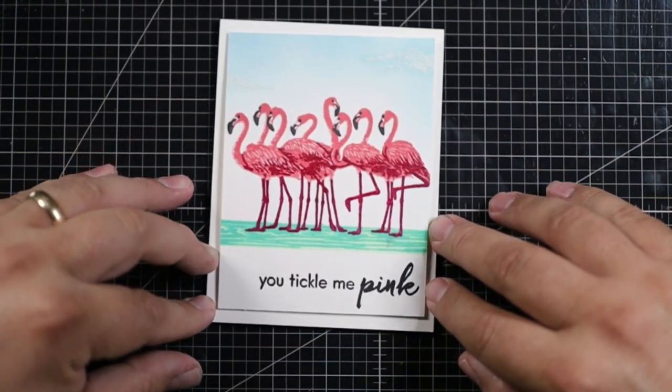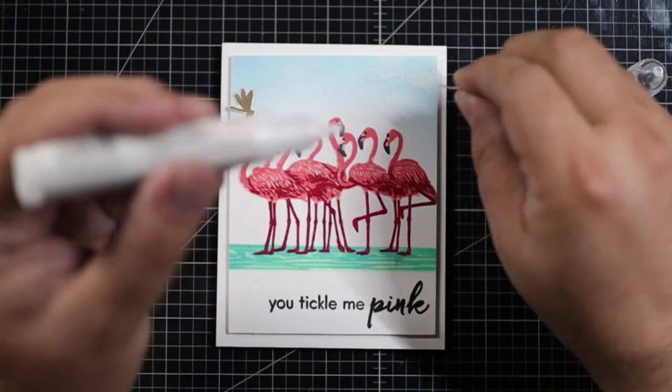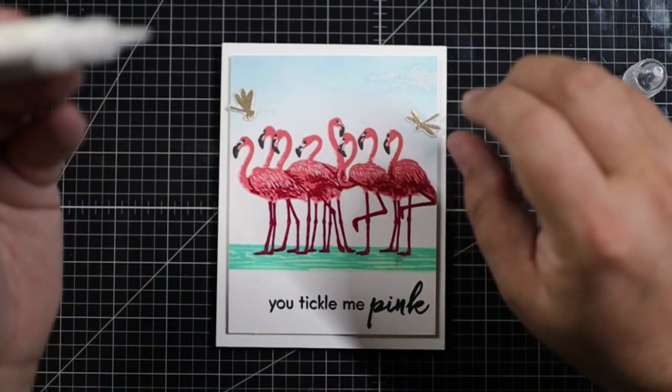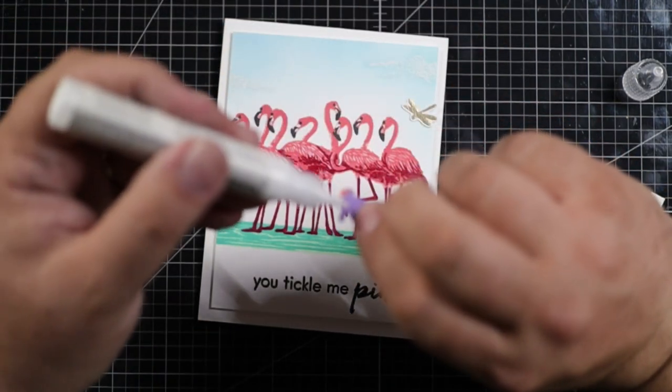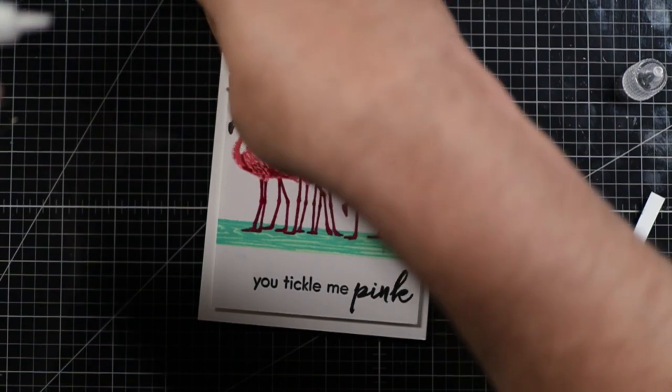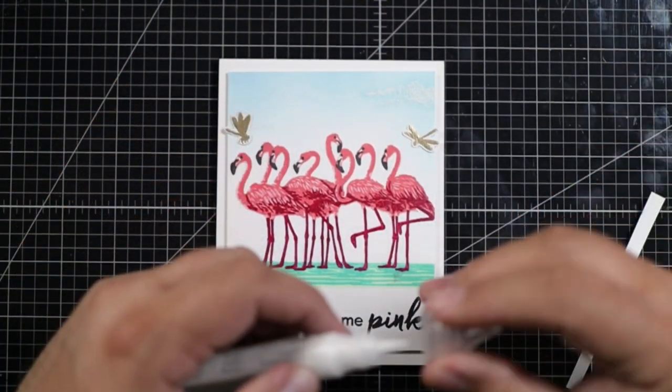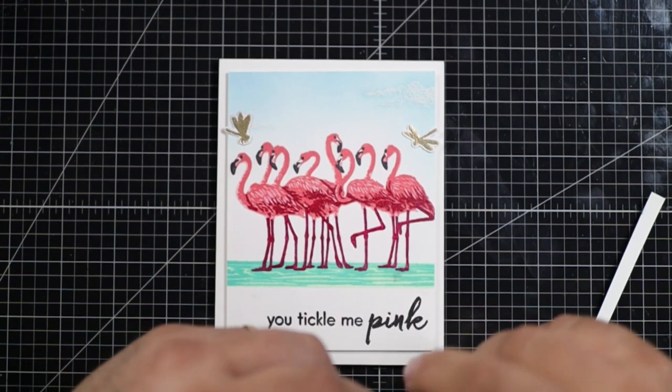And I had some leftover gold glitter embossed dragonflies from another project. I thought they'd be fun just to glue here on the front of this one. Add a little bit more shine. Use up some of my goodies I already made. And look how it just reflects in the light here. I just think it's a fun little project.